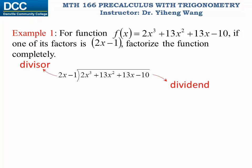The approach is very similar as well. The first term we want to write down, when multiplied by 2x minus one, will get close to 2x to the third power. Therefore the first term is x squared, because x squared multiplied by 2x minus one is 2x to the third power minus x squared. Then we do subtraction in long division — we subtract these two terms, and 2x to the third power and 2x to the third power cancel each other out. We get 14x squared.